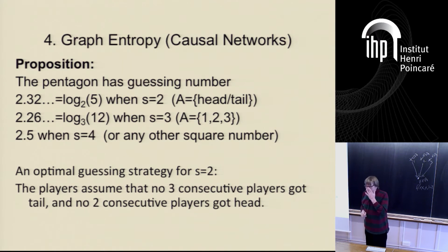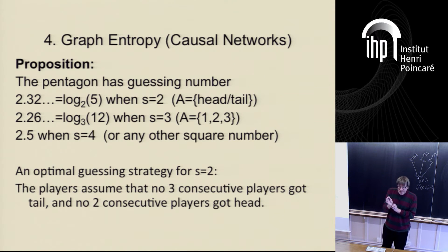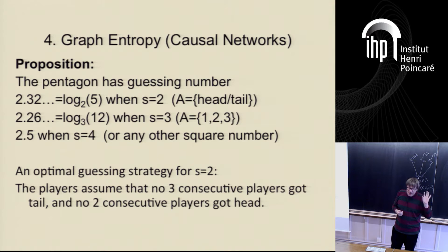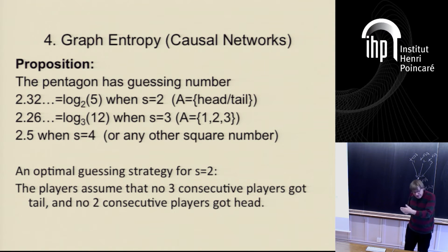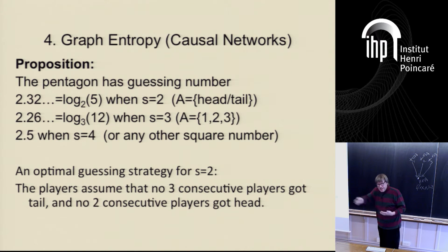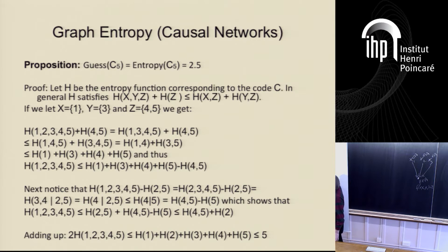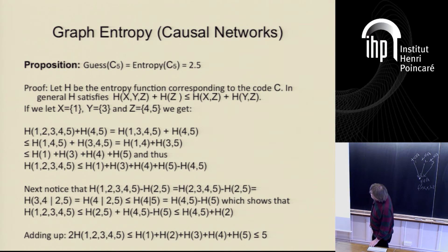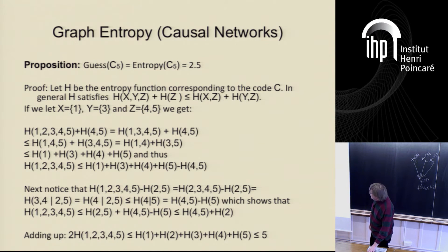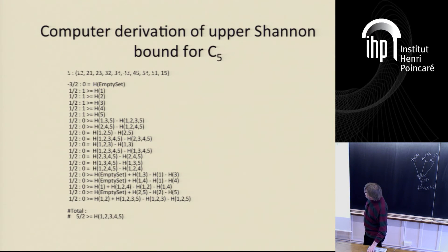In general, for every single directed graph there is a unique real number that is the guessing number — defined as a limit as the alphabet size grows. You also have a guessing number for each finite alphabet that can fluctuate a bit. To give an upper bound on the entropy of the C5 graph — which turns out to be 2.5 — you use Shannon's information inequalities.